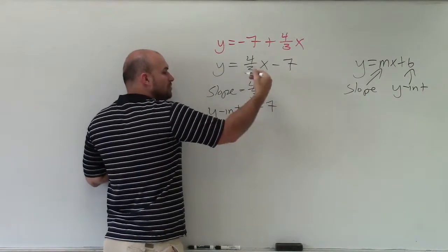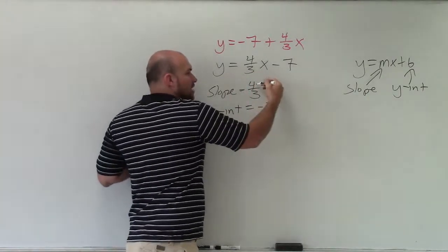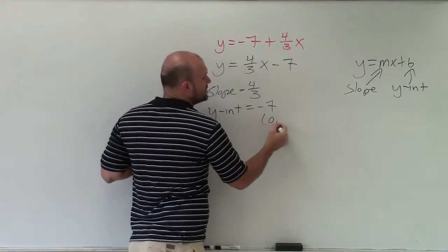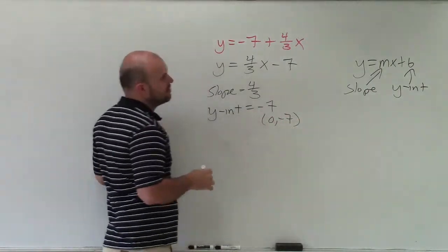Now, be careful. Remember, slope is a ratio, change of y over the change of x, where the y-intercept is a coordinate point where the graph crosses the y-axis.